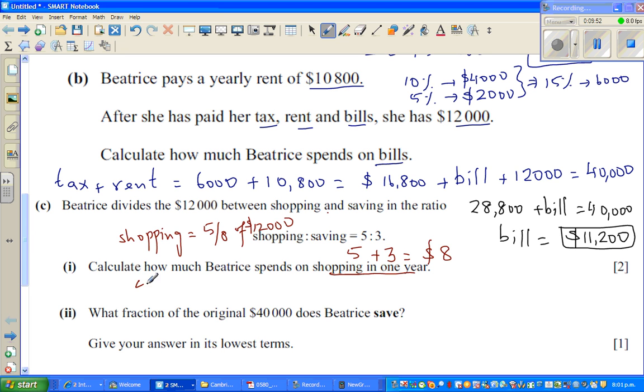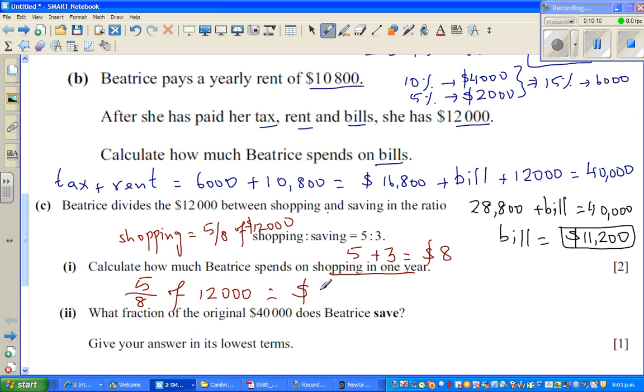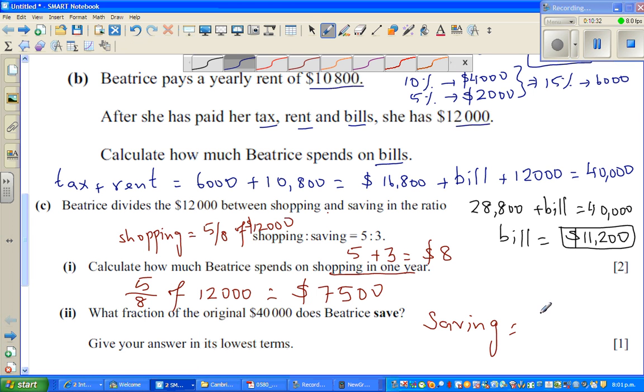So basically we have got the answer, which is $5/8 of $12,000. That's what we want to find. So you can go 5 divided by 8, that is $5/8 times $12,000, which is $7,500 is what she spends on shopping. So saving is $3/8 or $12,000 minus $7,500. So from $12,000 you take away $7,500, which is $4,500 is what she spends on saving.